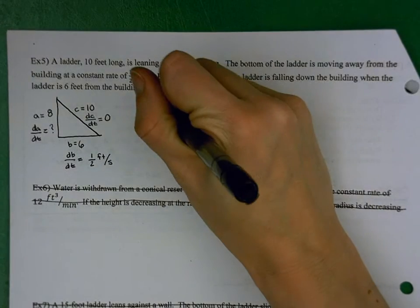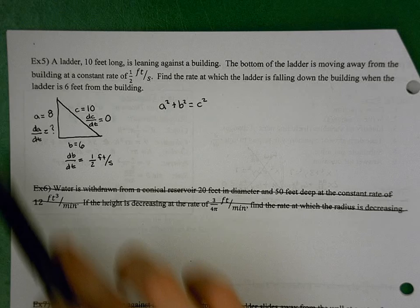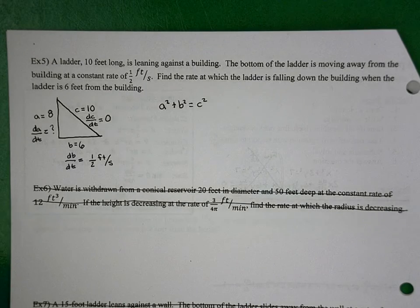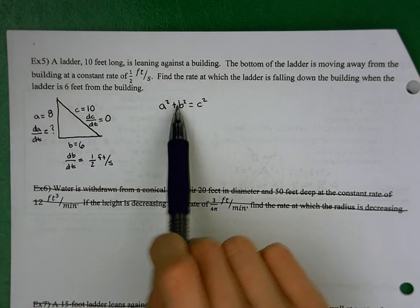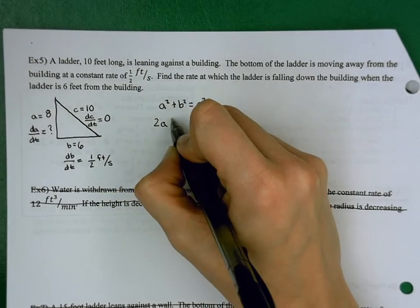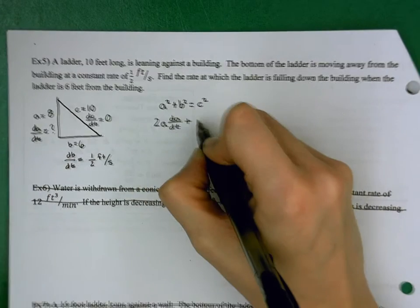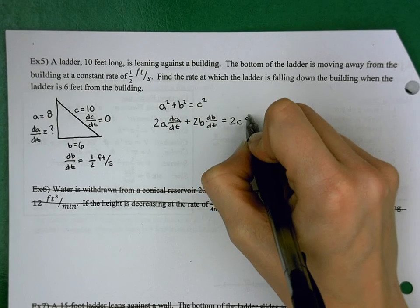Now let's utilize the formula: A² + B² = C². We know it's Pythagorean theorem because we're dealing with side lengths and there's no angle. From here on out, I encourage you to pause the video when I say we're going to do something, try it on your own, then restart and check. So we're going to take the derivative: the derivative of A² is 2A · dA/dt, the derivative of B² is 2B · dB/dt, and the derivative of C² is 2C · dC/dt.